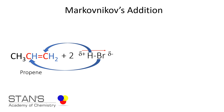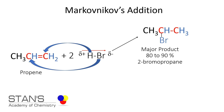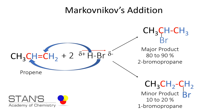The product will be 2-bromopropane, and this is the major product. About 90% of the product will be 2-bromopropane. There is a small possibility — a 10% chance — of a second product, which is 1-bromopropane. So, every time an unsymmetrical alkene reacts with an unsymmetrical reagent, the major product is 2-bromopropane and the minor product is 1-bromopropane.